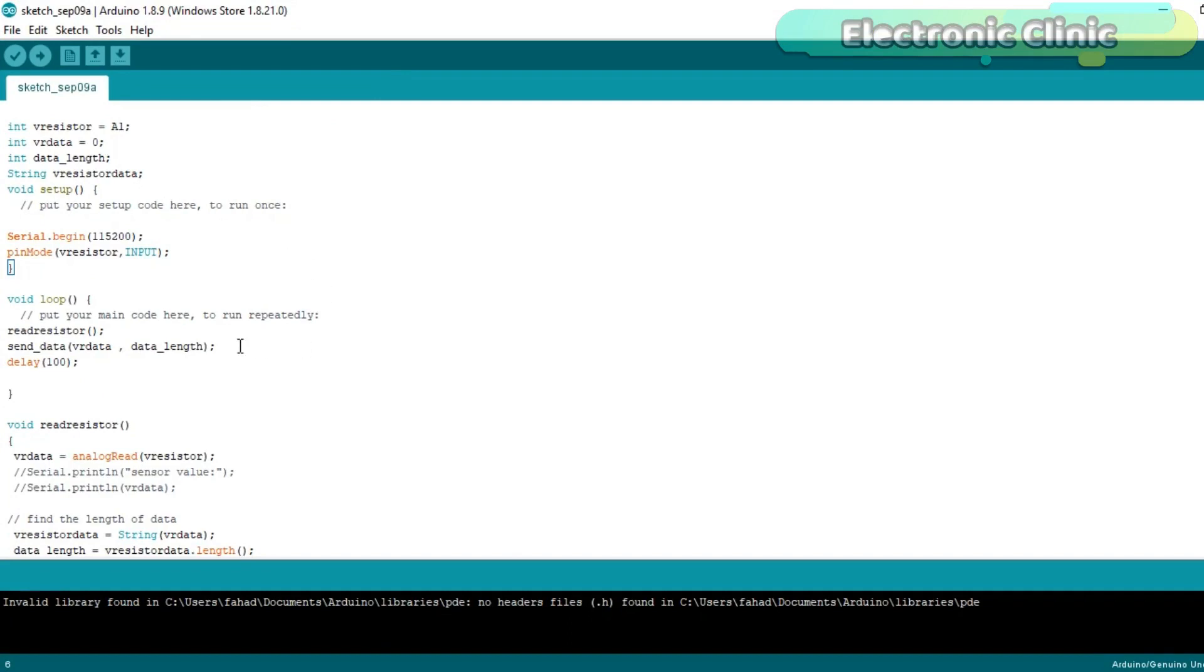This is a very simple program as you can see no libraries are used. The variable resistor is connected with the analog pin A1 of the Arduino. Then I defined a variable VR data of the type integer. This variable will be used to store the value of the variable resistor. Data length is a variable of the type integer which will be used to store the total number of digits and finally defined another variable of the type string. This variable will be used to store the complete string message.